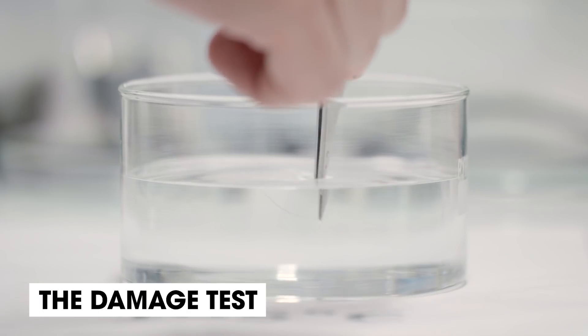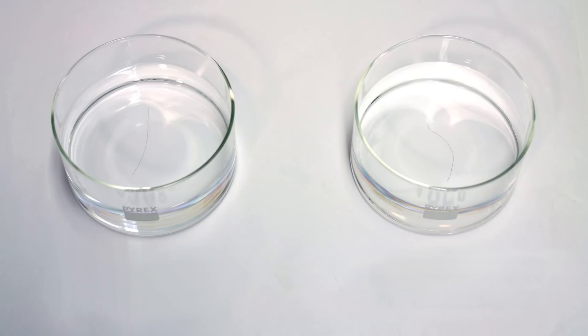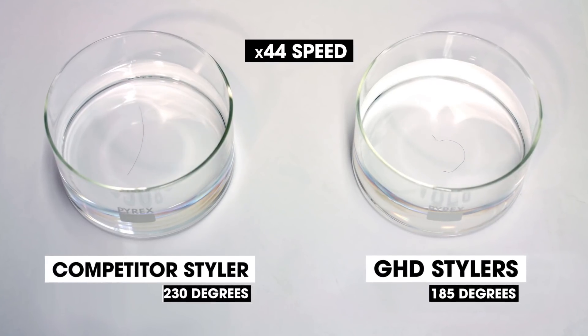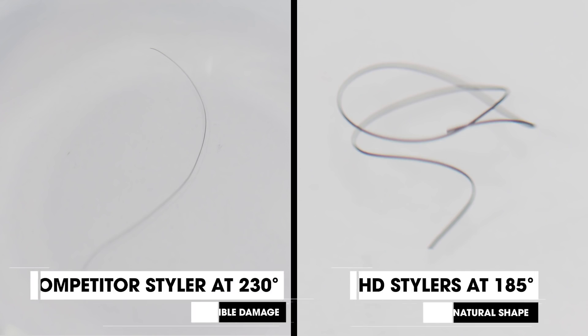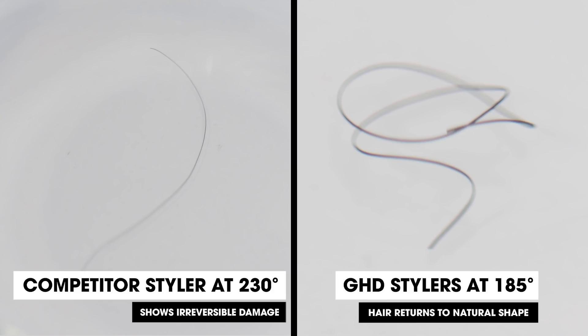So in this test, you can see that the hair, when it's wet, should revert back to your natural style. If you treat your hair at, say, 230 degrees, you've created structural damage. The hair has not reverted back to its original curly self.